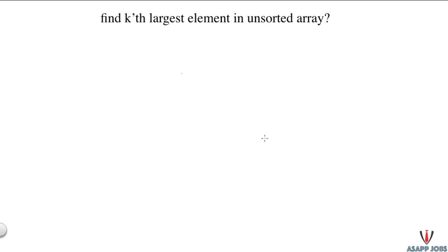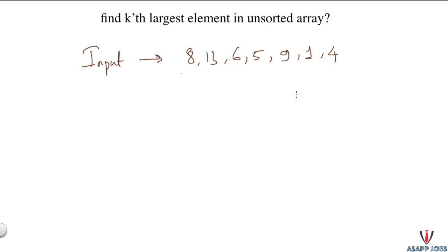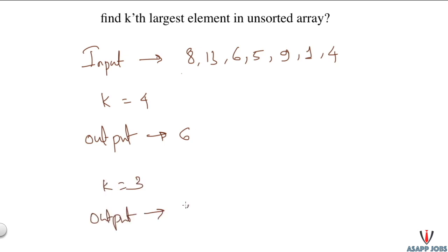Hello all, and today we will look into the interview question: an unsorted array is given, we need to find the kth largest element. Let's understand this question with an example. If the input sequence is given and k equals 4, which means we need to find the fourth largest element, the output would be 6. Similarly, if k equals 3, then the output would be 8. Before you look into the solution, pause this video and try yourself first.